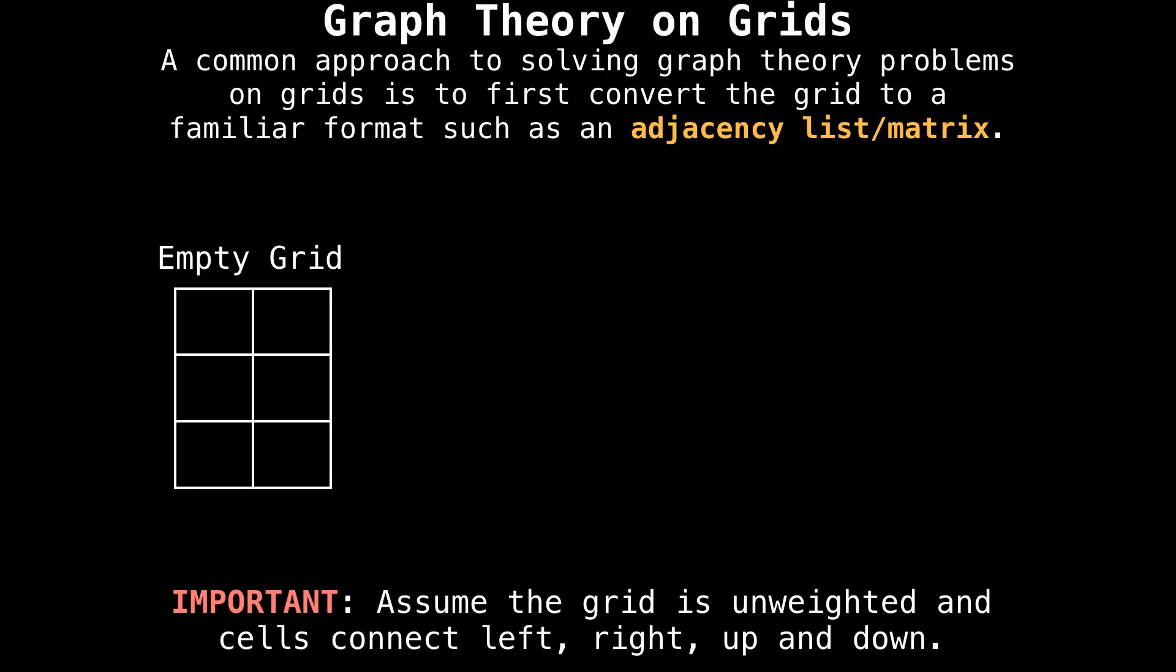A common approach to solving graph theory problems on grids is to first convert the grid to a familiar format such as an adjacency list or an adjacency matrix so we can easily work with them. However, this isn't always the most efficient technique, but we'll get to that.